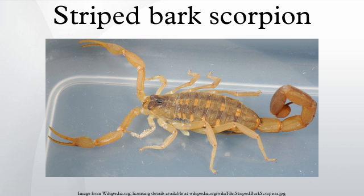Reports have also found C. vittatus in locations inconsistent with the natural geographic distribution aforementioned. Populations seem to be found only in particular cities outside its natural distribution, so it is thought likely that human activity has introduced C. vittatus to these areas. They include locations east of the Missouri and Mississippi rivers in Illinois, Iowa, Kentucky, Louisiana, Mississippi, Missouri, North Carolina, and Tennessee.